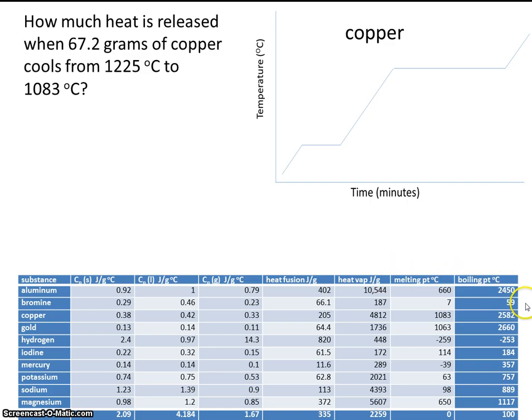So we're looking at the element copper. Find copper. And the first thing we'll want to do is look at the melting point, and then we'll want to write that on the graph. It's 1063. And then the boiling point, 2660. We'll also write that on the graph.